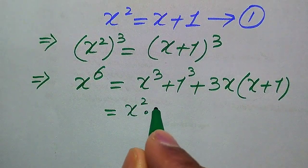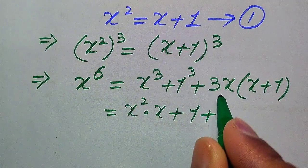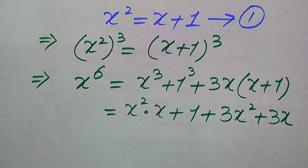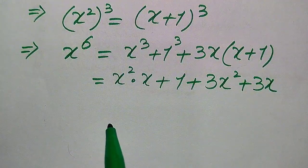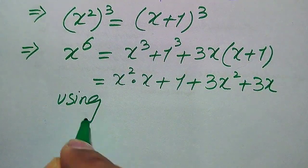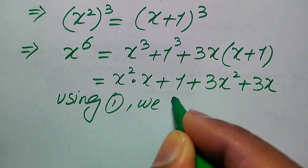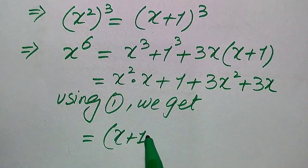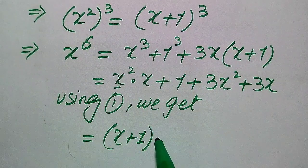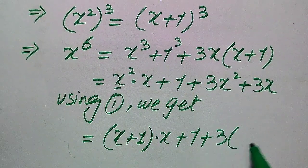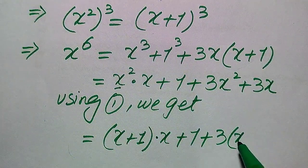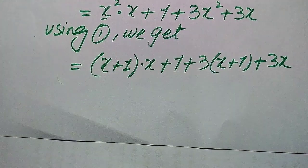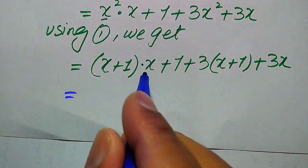We break x cubed as x² times x. The 1 cubed becomes 1. Multiplying 3x on both values gives 3x² plus 3x. Now we convert all terms into the x form using Equation 1 (x² = x + 1). Substituting x² equals x plus 1 gives (x plus 1) times x, which expands to x² plus x, and then we substitute x² again.